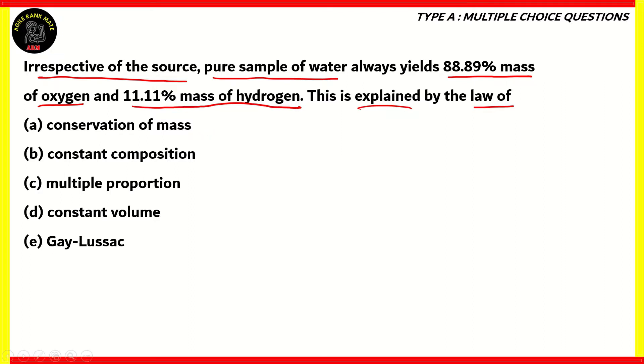So how do we solve this question? Well, in order to solve this question, we need to understand the laws that are given in the options. Now, what about option A? It says conservation of mass. So what's the law of conservation of mass states? It states that mass cannot be created or destroyed in a chemical reaction. And does that help in giving us this statement in the question? No, it does not. So option A is incorrect.